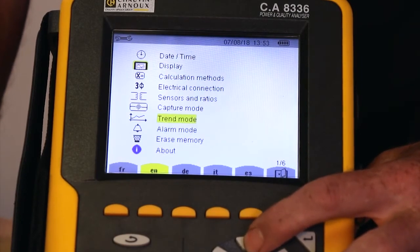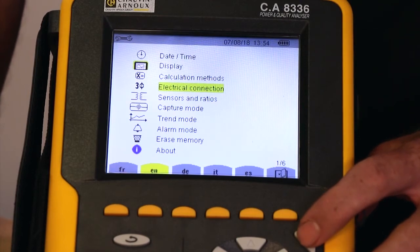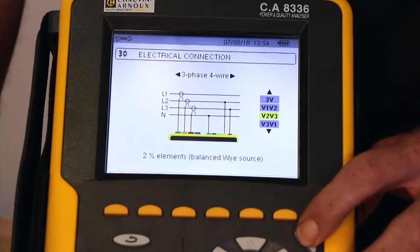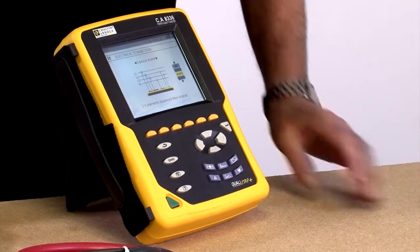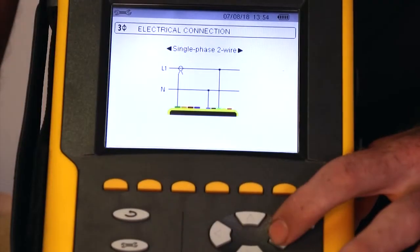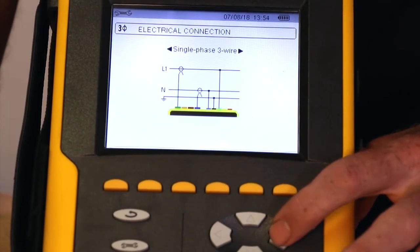So let's go straight into selecting the electrical connections. Highlight electrical connection, press enter and by pressing the right cursor key, you'll be able to see the various electrical connections. Select the one that's appropriate to the installation you're connecting to and press enter.